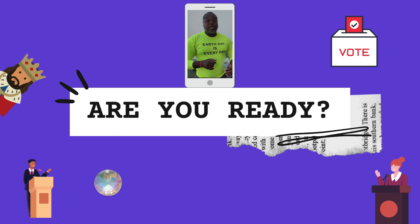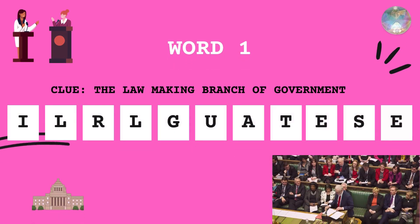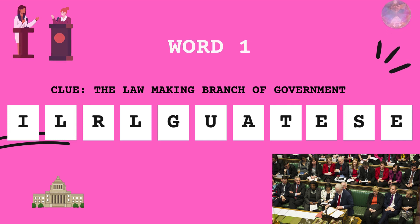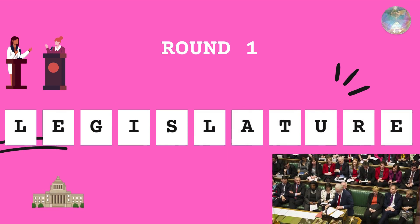First word. Your clue is: this is a lawmaking branch of government. These are the people in government who make or create the laws. That's right — the legislature.